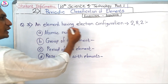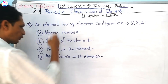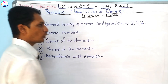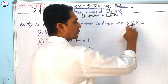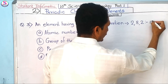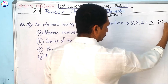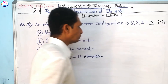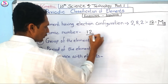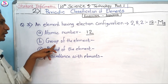Question 3: An element has electron configuration 2, 8, 2. These four sub-questions are based on this element. Observing the configuration: 2 + 8 + 2 = 12, so its atomic number is 12, and this element is magnesium.